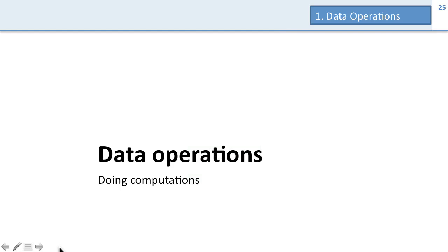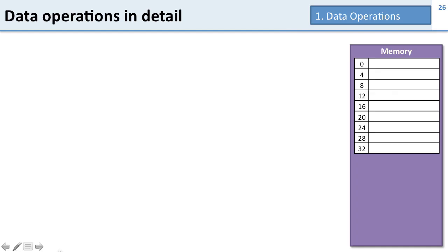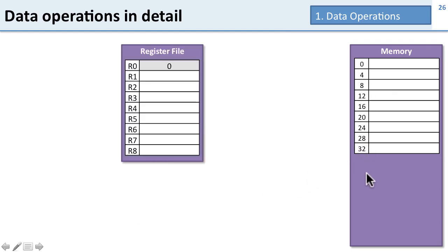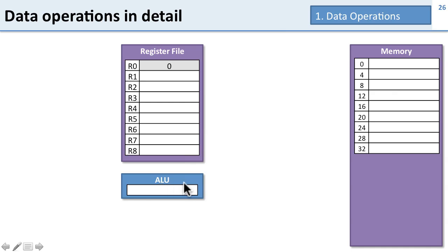Now we're going to talk about data operations — that is, instructions in MIPS that do computations. Before we do that, let's go through the processor and how everything's hooked up. We have our memory, and here you can see the word addresses. We've got our register file — I've made it smaller so it'll fit on the screen — with nine registers shown, and register zero is always zero. We also have our ALU, which stands for arithmetic logic unit, the part of the processor that does the actual computation.